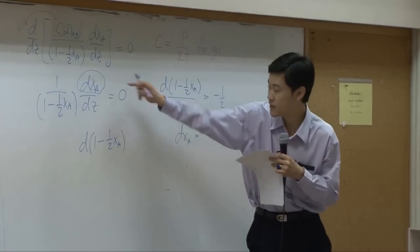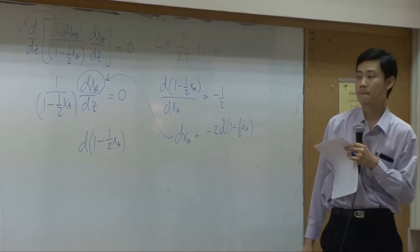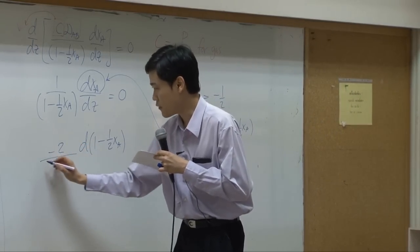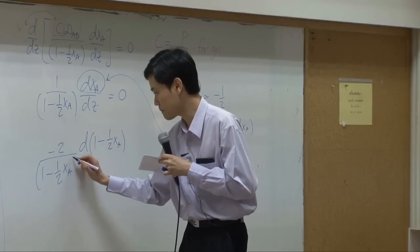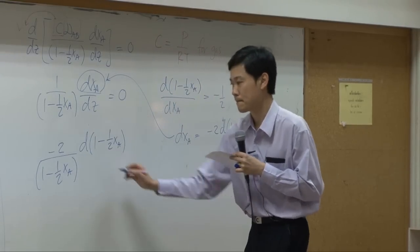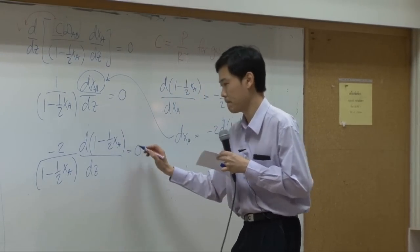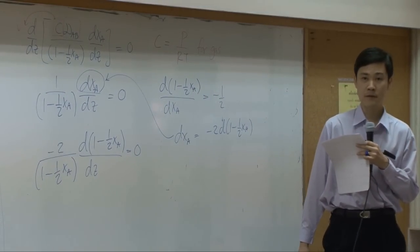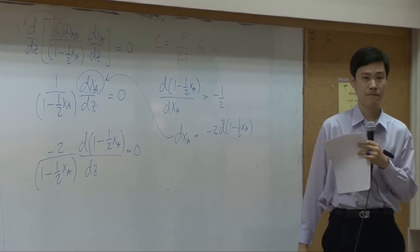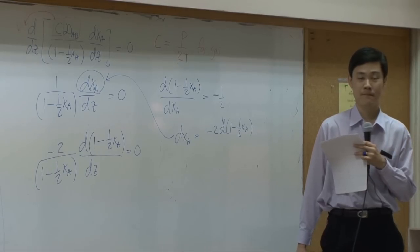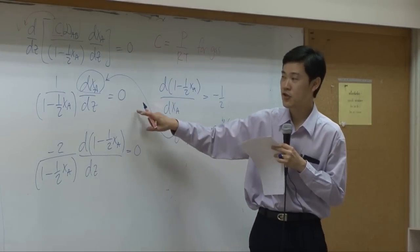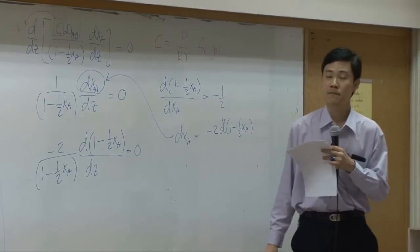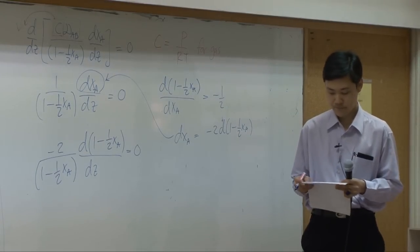Bring this to replace in here. Then you get minus 2 over 1 minus half X_A. Are you following? From here to there, I just change X_A to this part so that I can integrate it easily.